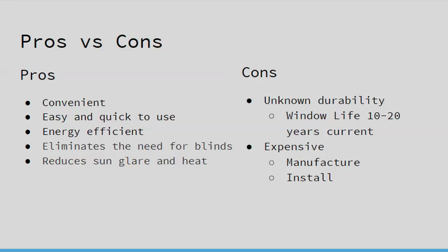Some pros and cons of suspended particle devices. The pros: they're convenient, easy to use, and energy efficient. It requires very low voltage to keep them dimmed. It also eliminates the need for blinds, saving some cost, and it reduces sun glare and heat very efficiently. Some cons: the window life and unknown durability. Currently, windows last about 10 to 20 years, and there hasn't been a lot of testing done on these still-developing technologies. As it stands, it's very expensive to manufacture and install these windows.